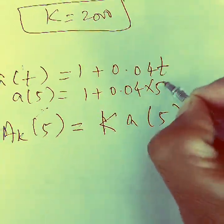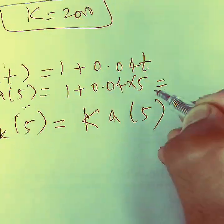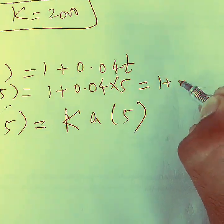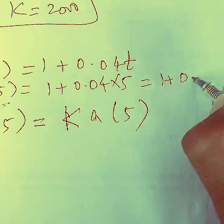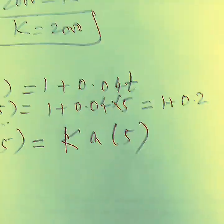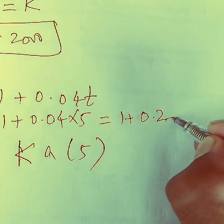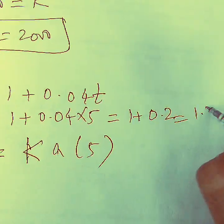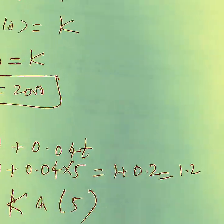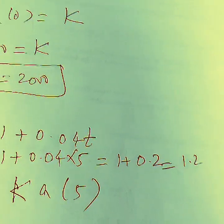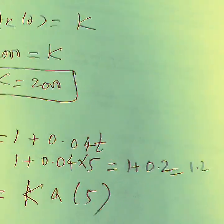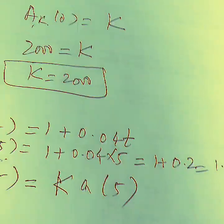We compute a(k, 5) = k times a(5). Plugging t = 5 into a(t) = 1 + 0.04t: a(5) = 1 + 0.04 × 5 = 1 + 0.2 = 1.2.